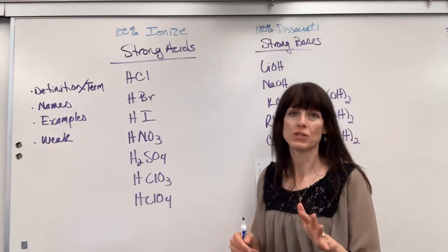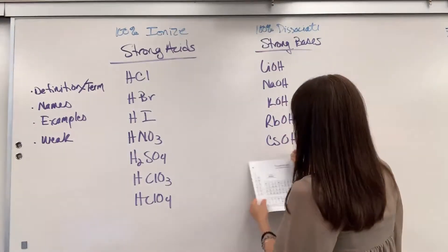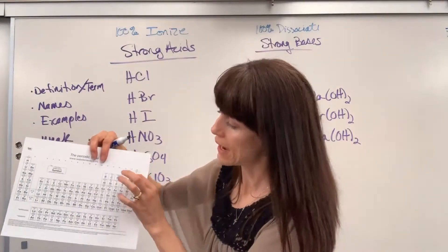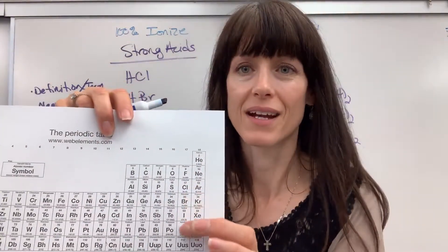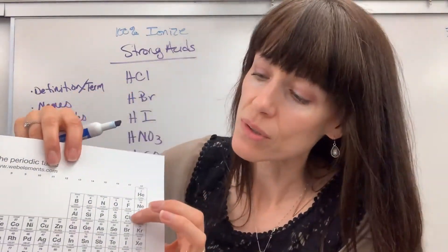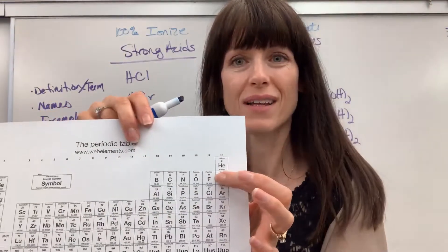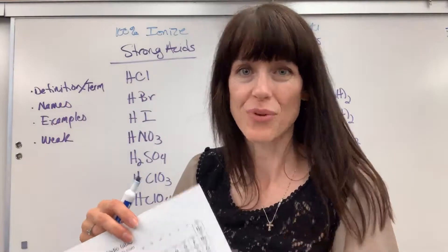Now, a common question that will catch students that I want to point out. Now, I want you to notice the halogens right here. Okay, there are the halogens. You can see hydrochloric, hydrobromic, hydroiodic. The one that sticks out, you think, oh, it should be there, is hydrofluoric. HF.